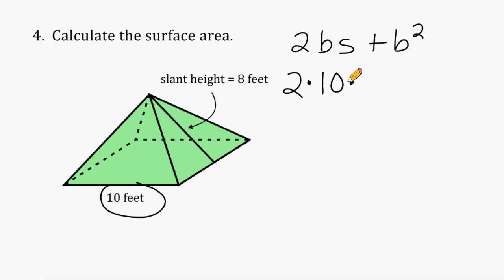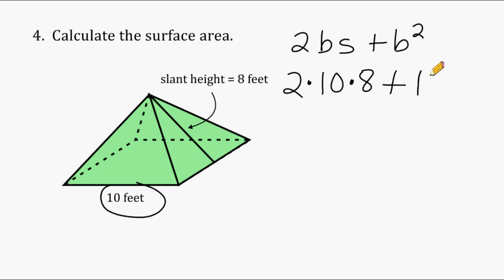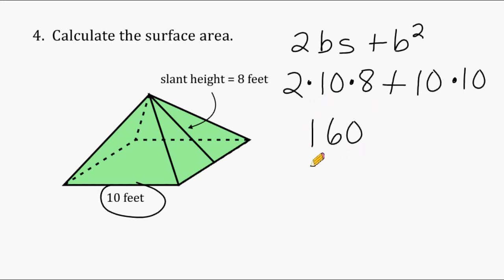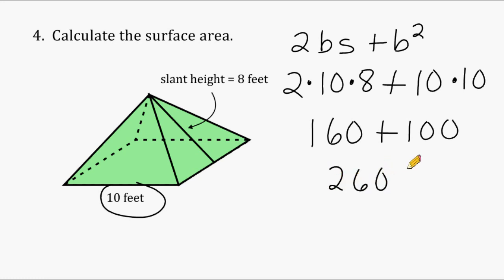We multiply by the slant height, which is 8 feet. Now 2 times 10 times 8 gives us the area of the four triangular surfaces. After we figure that out, we add the area of our square base, calculated by taking the base of 10 feet and squaring it. So 2 times 10 times 8 equals 160 for the triangular surfaces, and the square base is 100, giving us a total surface area of 260 square feet.